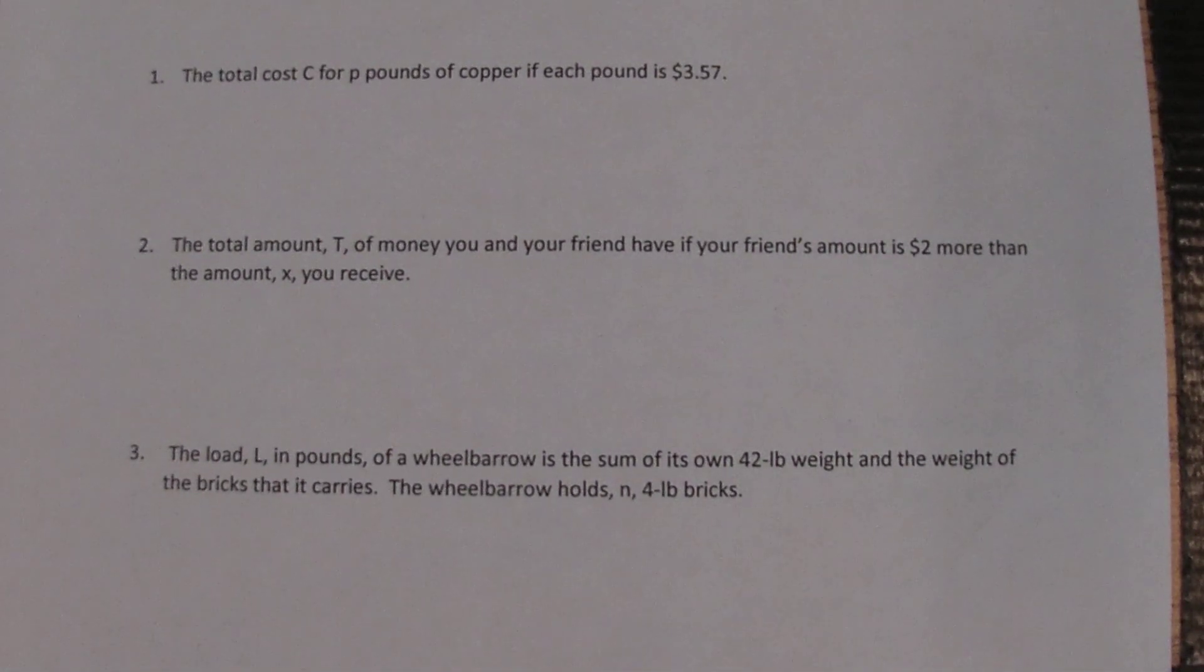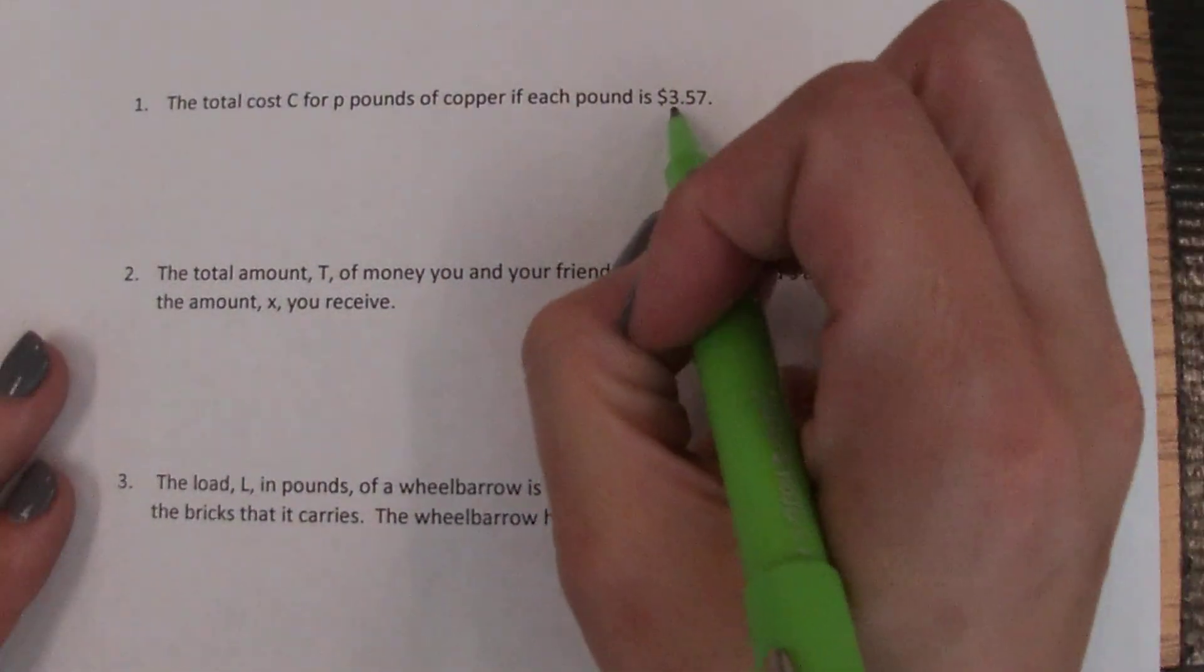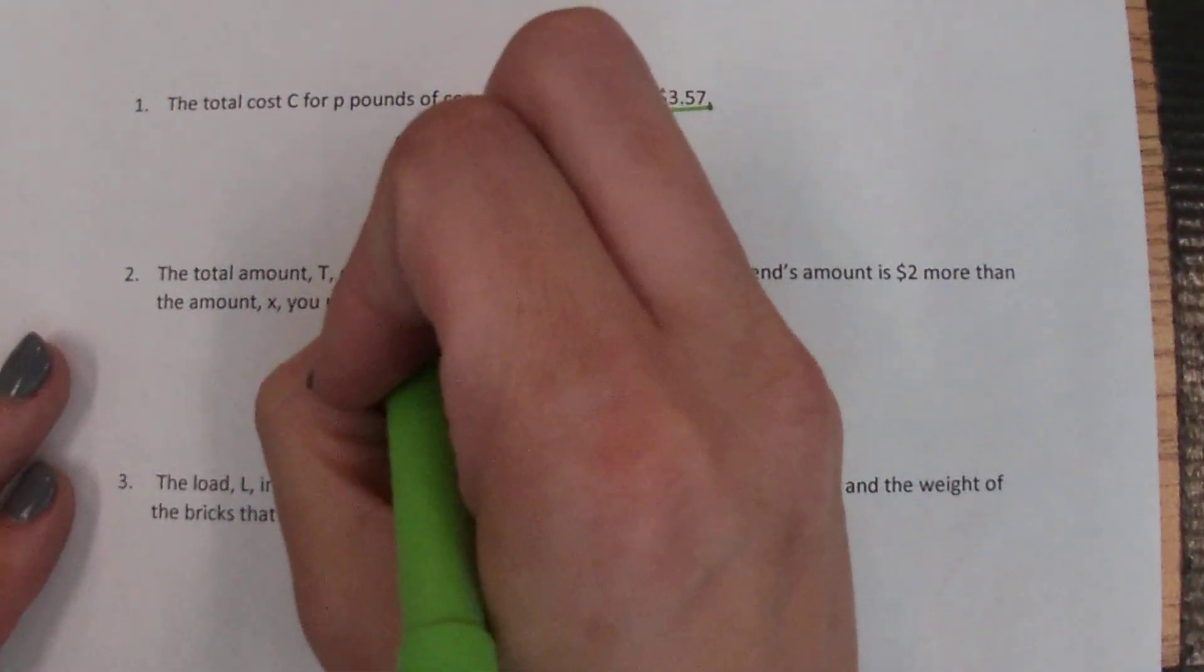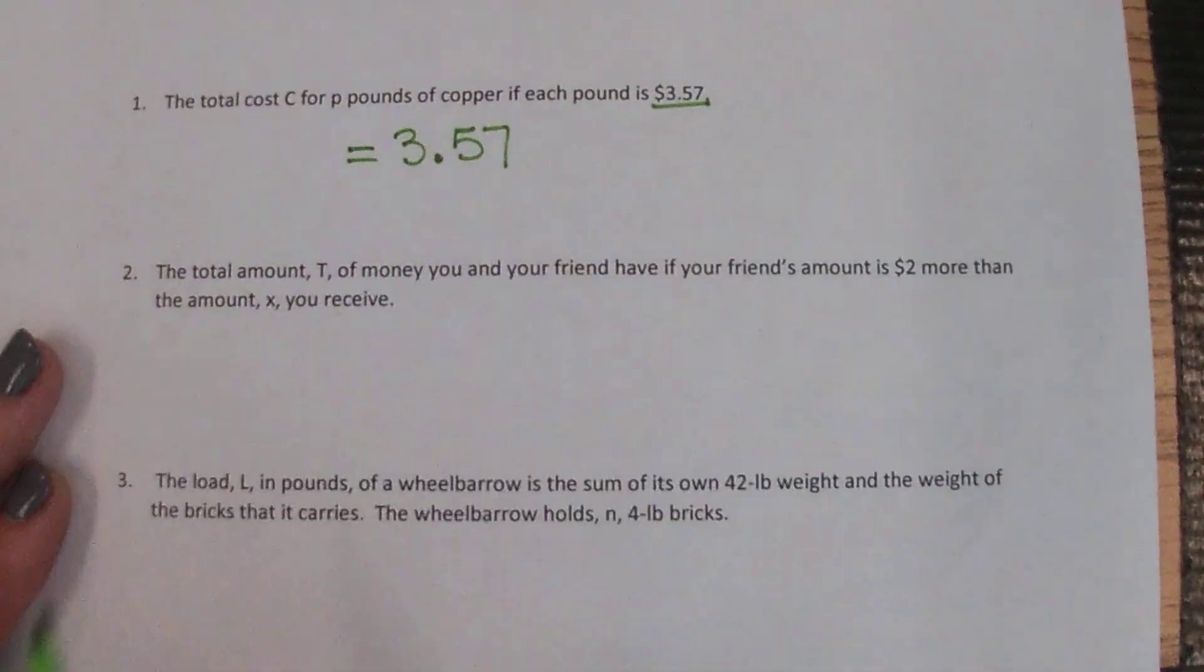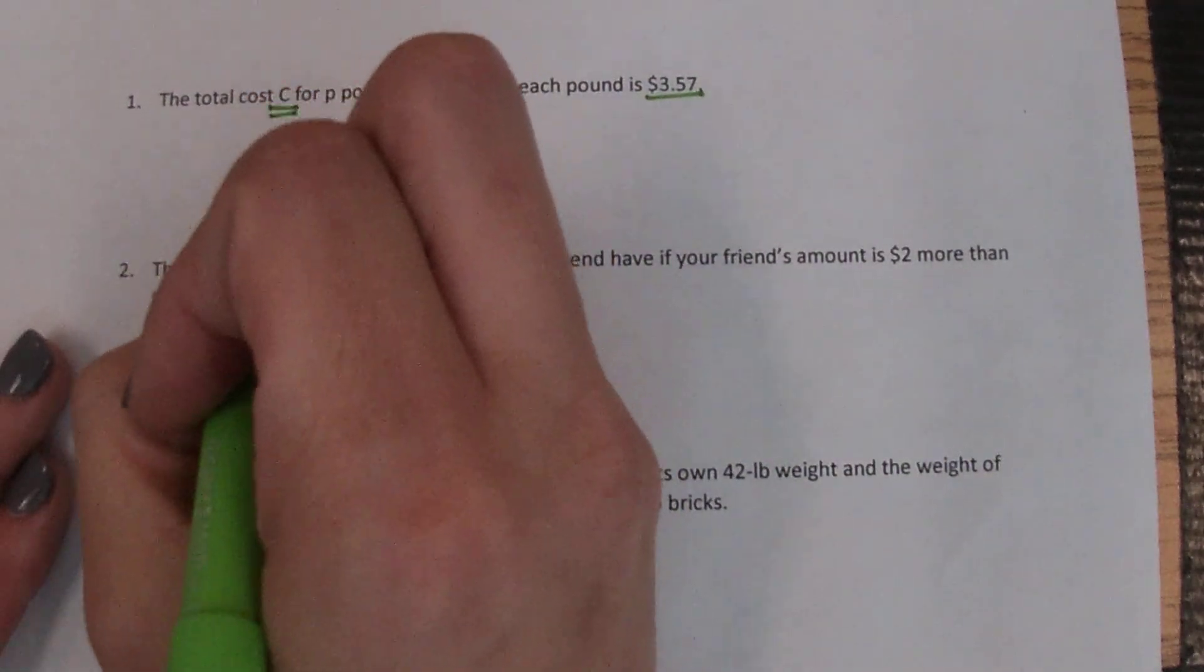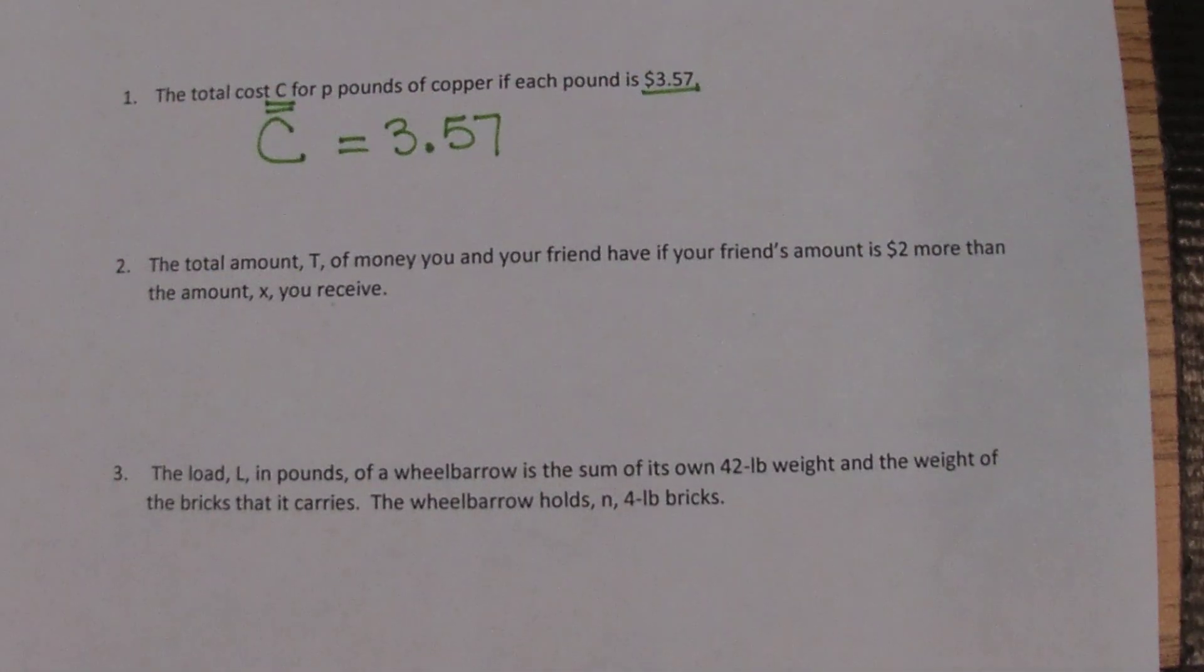We know that it's going to cost a certain amount if we get one pound, if we get two pounds, if we get three pounds, if we get ten pounds, if we get a hundred pounds. But if we wrote those all down in a table we'd be listing forever, so how can we hold all of those values into one equation, one function rule? The biggest piece here is just making sure we get our variables right. If each pound is $3.57, this tells us total, so we know we're taking some stuff and we're setting it equal to a total where the total is C.